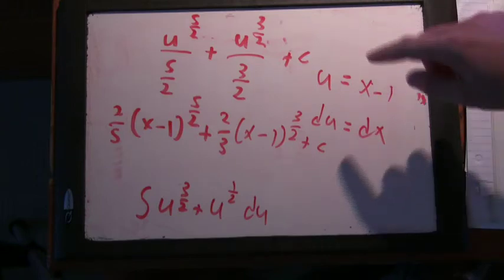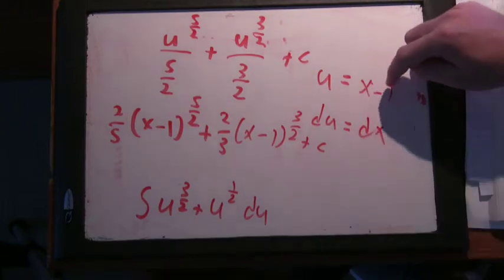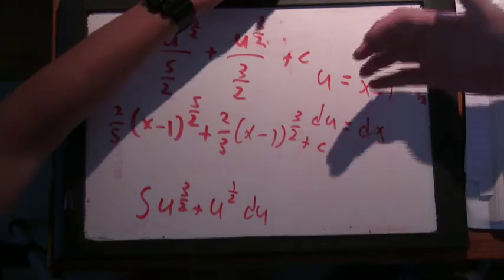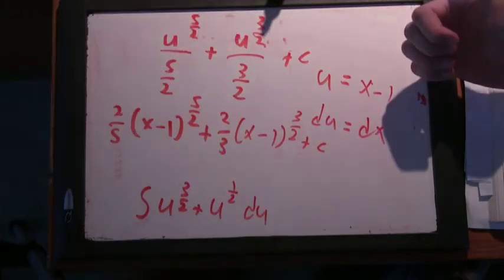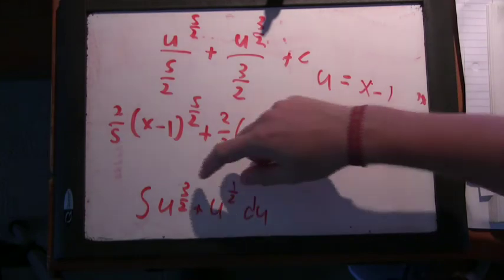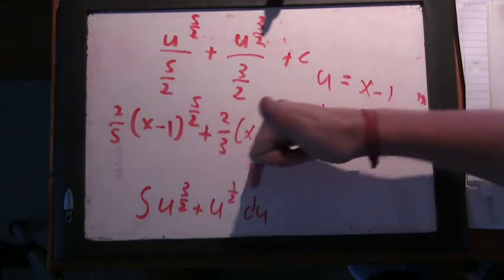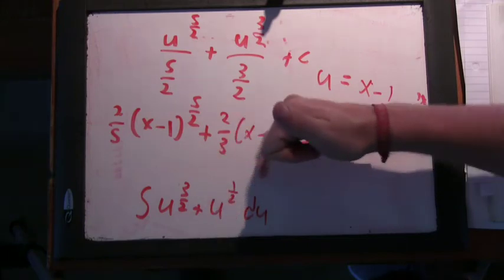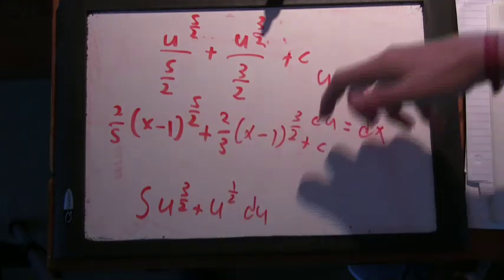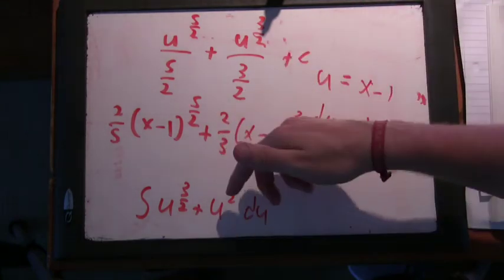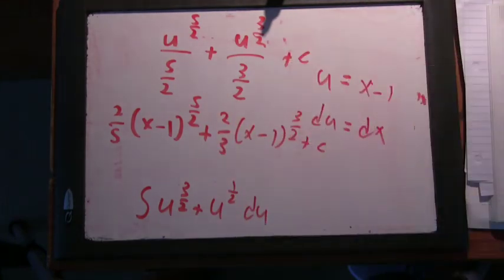But that u substitution, when we just had x times the square root of x minus 1, the problem is we couldn't multiply through the way we wanted to. And the u substitution allows you to break this essentially into a sum of square root terms, which you didn't have before. Previously we had a product, now we had a sum of just powers and we could do it. So that shows some of the power of u substitution.